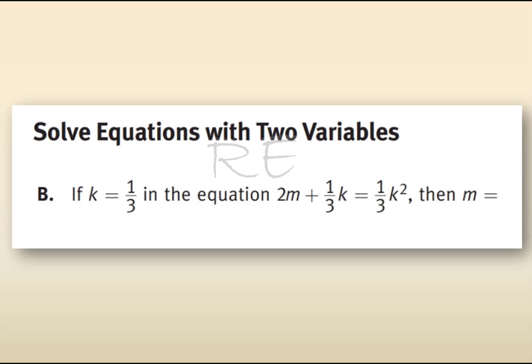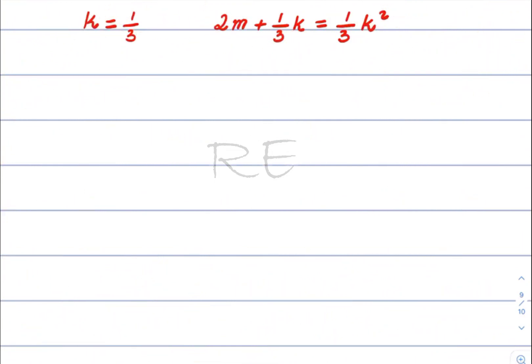If k equals one-third in the equation 2m plus one-third k equals one-third k squared, find the value of m. First, we're going to replace k by one-third.